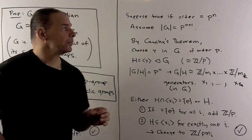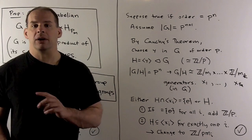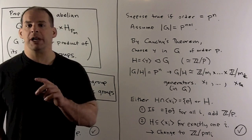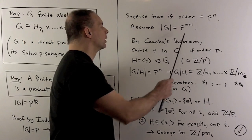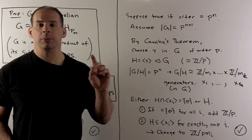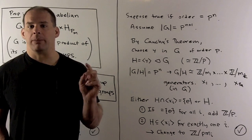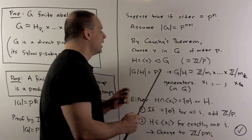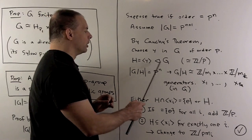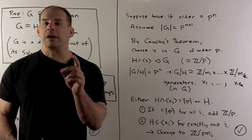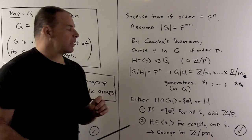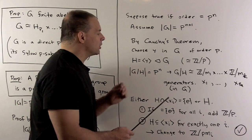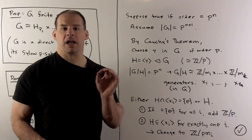For the induction step, we assume the result holds whenever the order of the group is pⁿ, and assume our group G has order pⁿ⁺¹. By Cauchy's theorem, we can find a y in G with order p. We consider the subgroup H generated by y, so H is isomorphic to Z mod p, and because our group is abelian, H is normal in G. We can form the quotient group G mod H, which has order pⁿ, so induction applies. That means we can write G mod H as a direct product of finite cyclic groups.